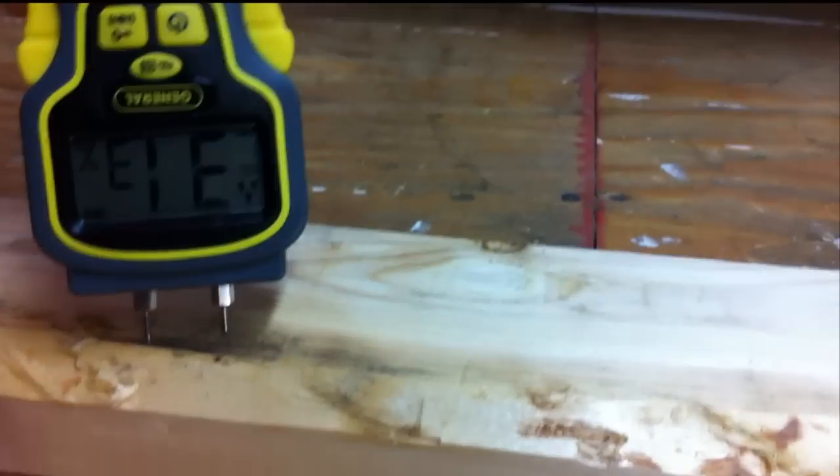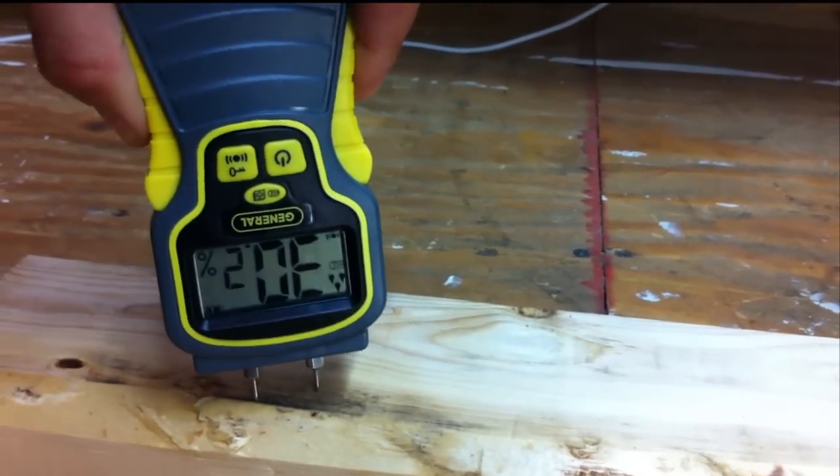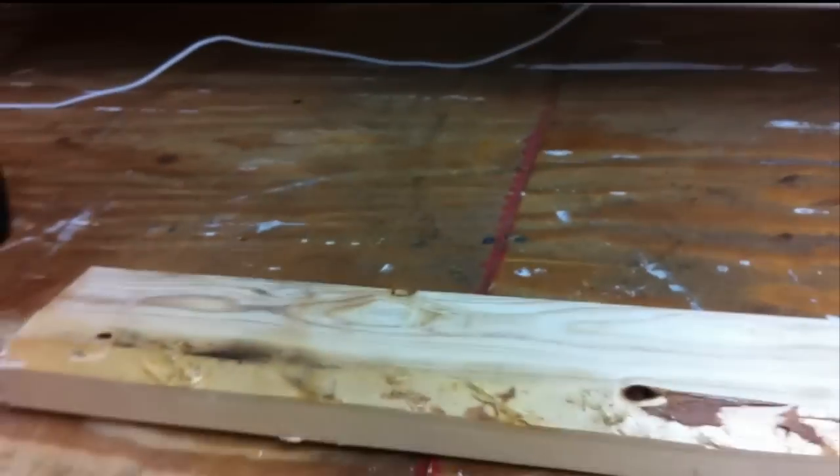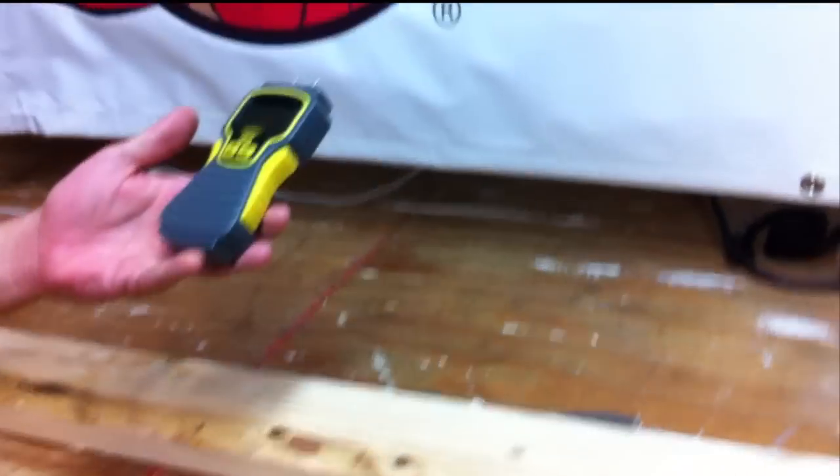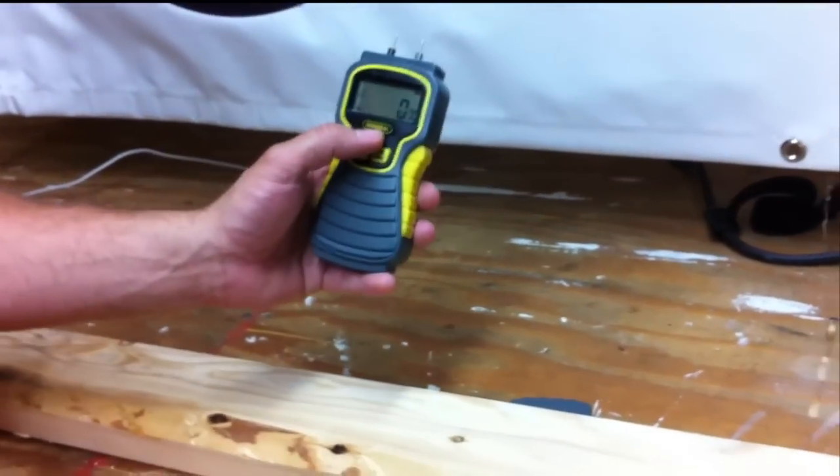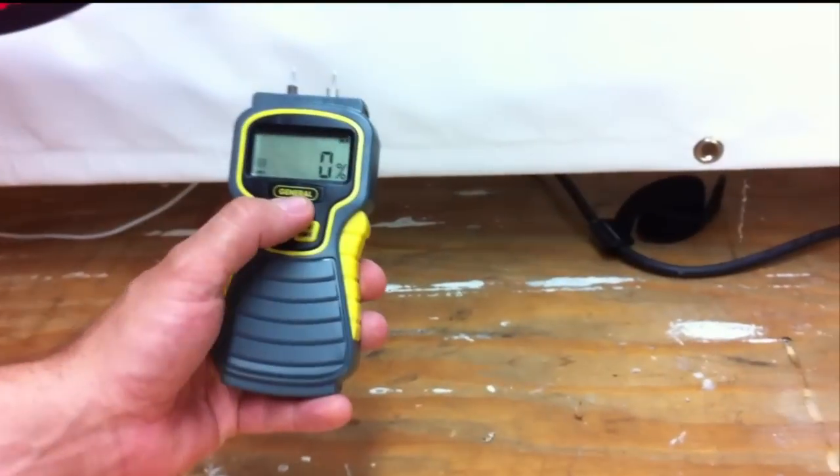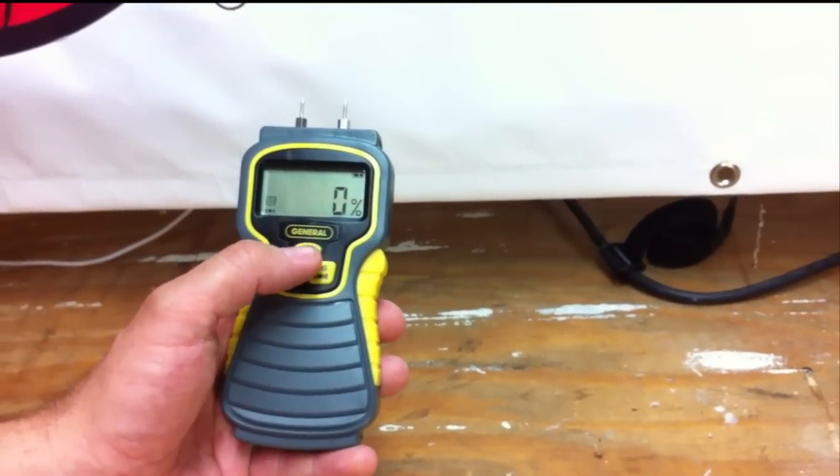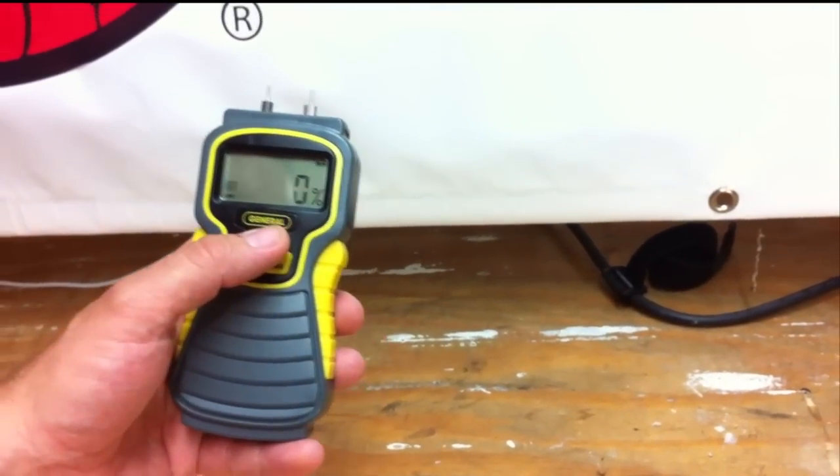So, you can use this tool to locate leaks. It works on concrete, wood, plaster, carpet. There's a button right here that you go from wood to just general building materials. So, that offsets the scale a little bit.